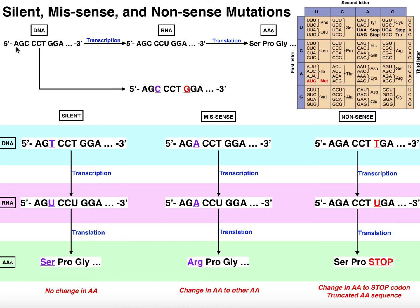This is what I'm going to consider my reference sequence — my reference DNA, my reference RNA. Now, what's going to happen if I take any one of these nucleotides and mutate them? I have three options for types of mutations: a silent mutation, a missense, and a nonsense.